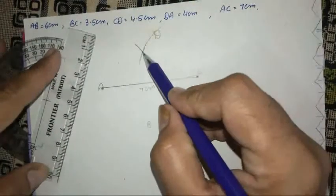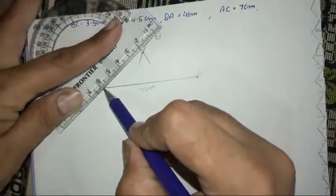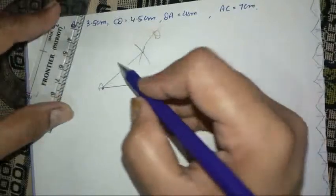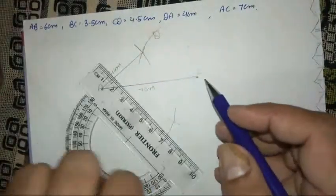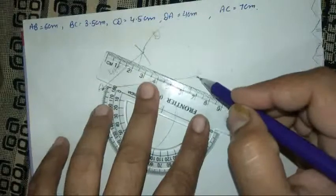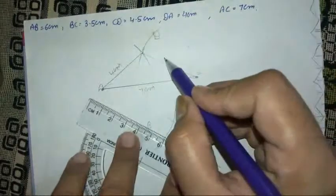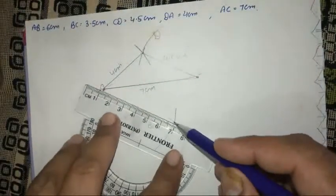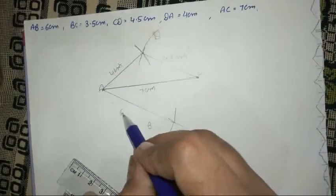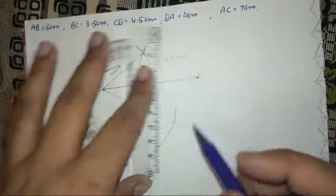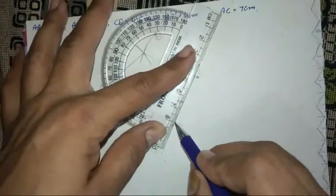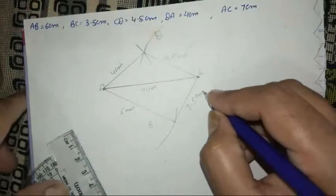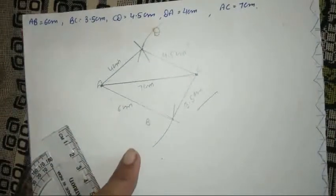After that, we connect the center point to A. AD was 4 cm. Then CD was 4.5 cm, so we connect it to the center point and write 4.5 cm here. This is AB, which was 6 cm. BC was 3.5 cm, so we connect this center point to C and write 3.5 cm. And we make a quadrilateral.